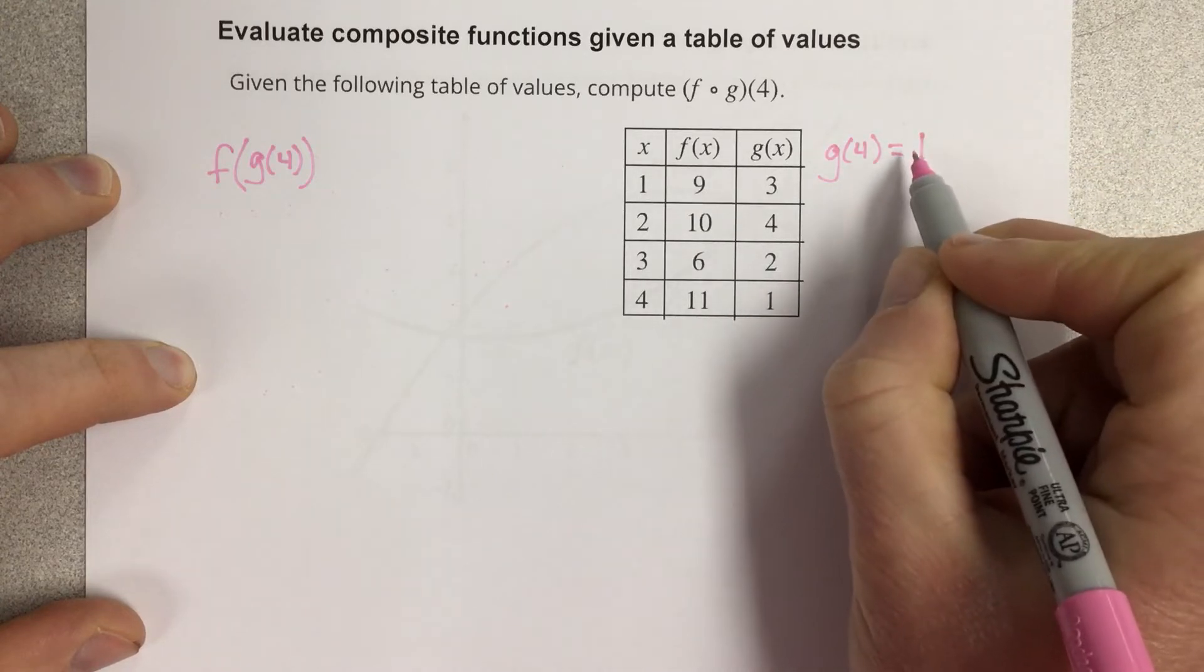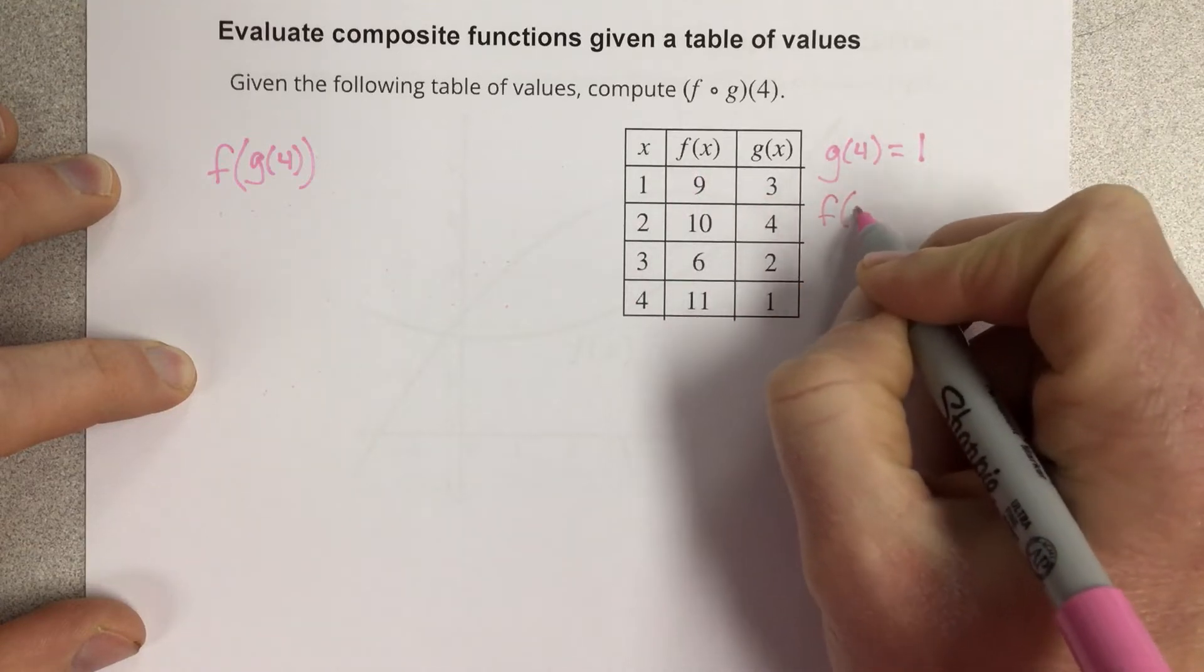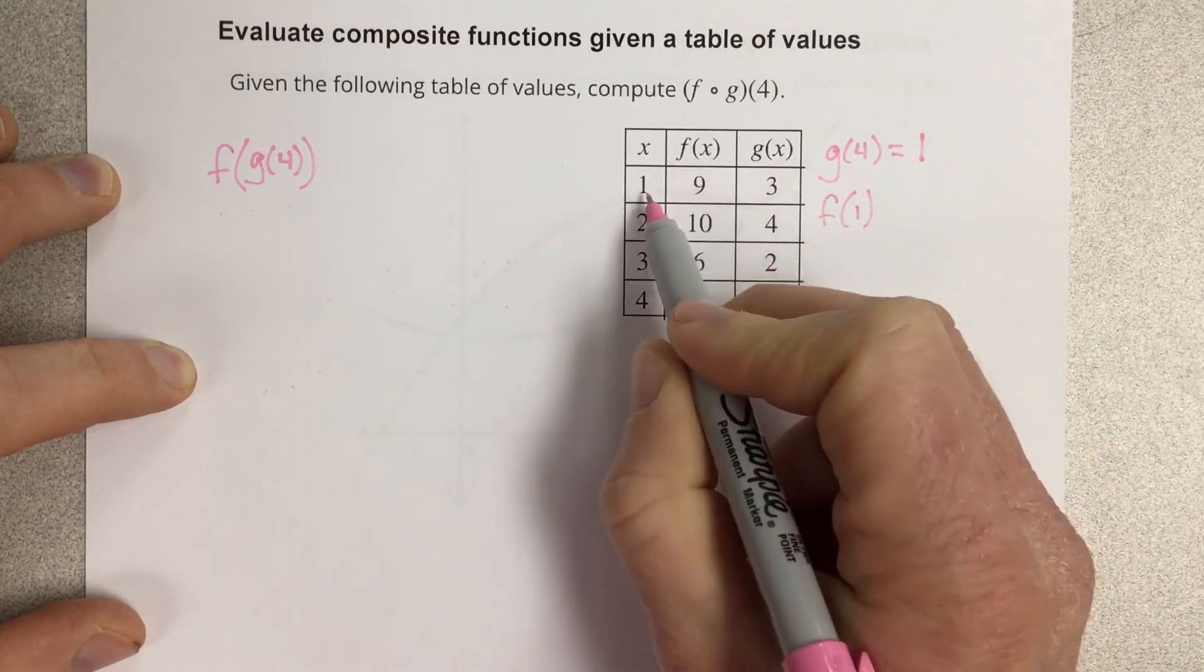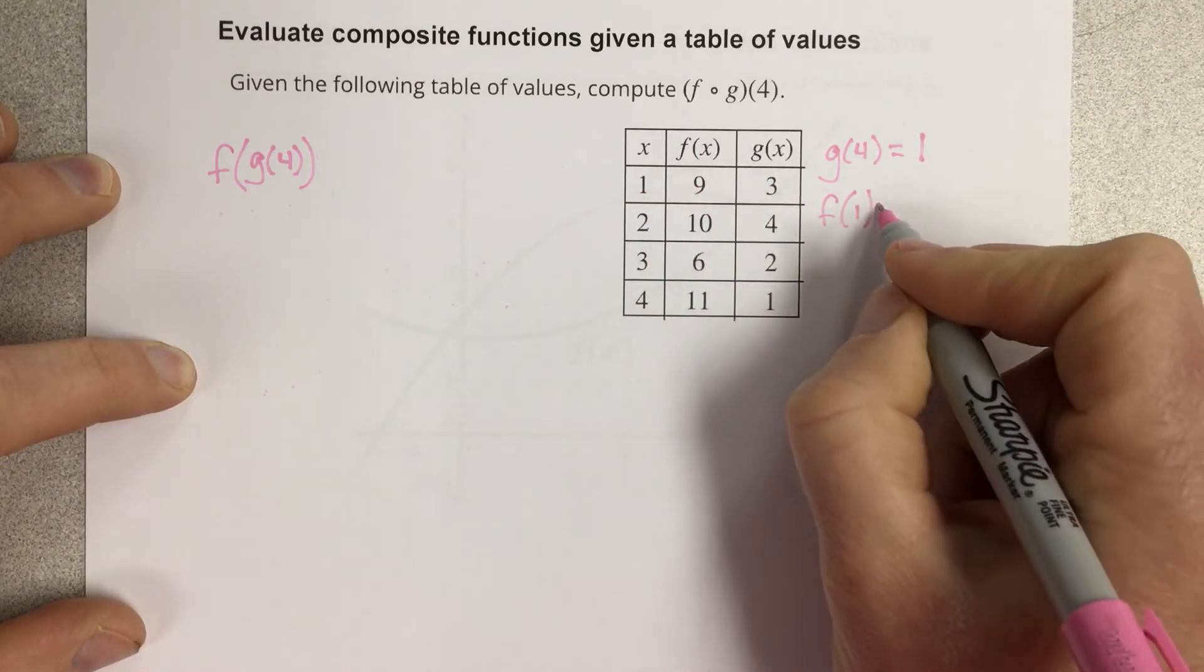So 1 is going to be my input for the f function, so I need to go and write down f of 1 and find out what f of 1 is. So I go to the x value of 1, look at the f function, that's an output of 9.